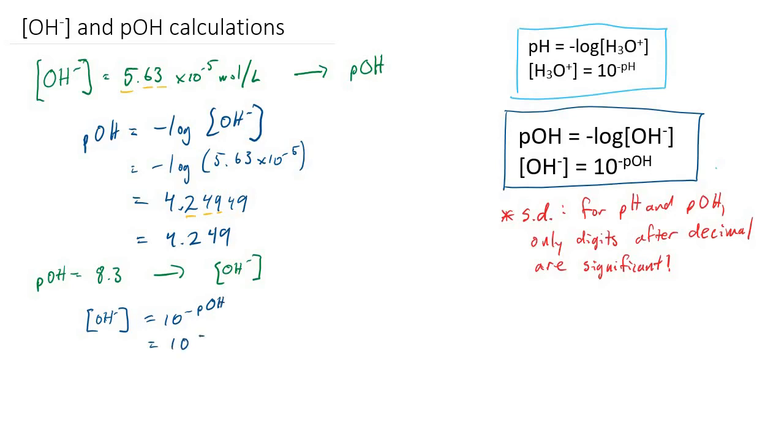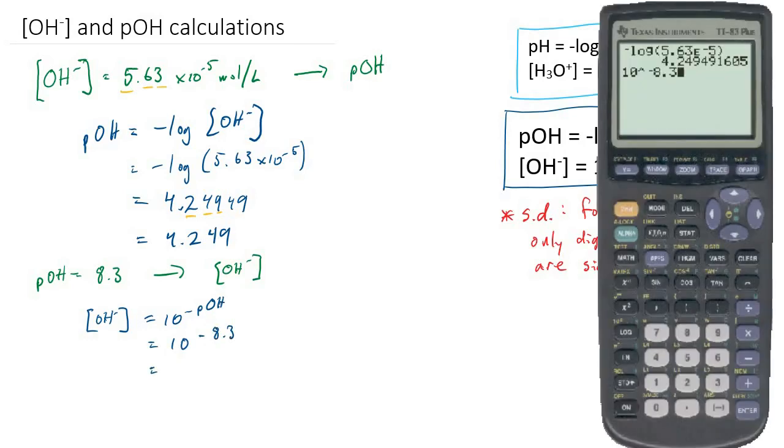So this is going to be 10 to the minus 8.3, and 10 to the minus 8.3 is equal to 5.0118 times 10 to the power of negative 9.